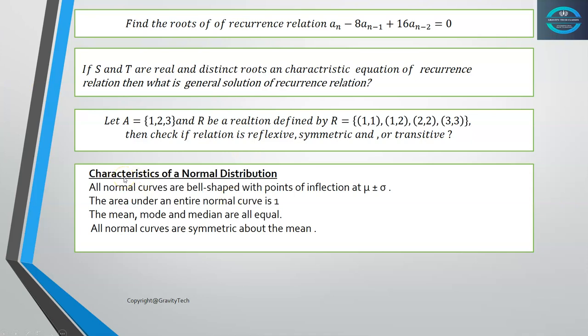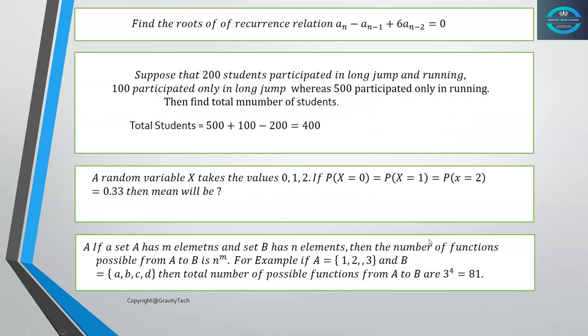Regarding the properties of normal distribution: all normal curves are bell-shaped with the point of inflection at mu plus or minus sigma. The area under the entire curve is always 1. The mean, mode, and median are all equal, and all normal curves are symmetric about the mean.